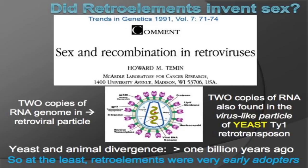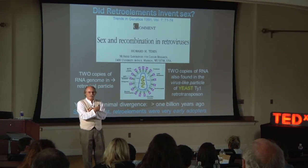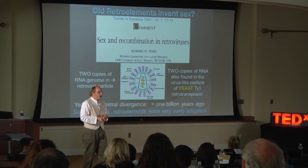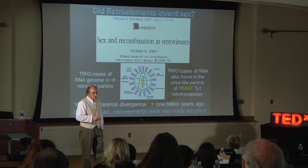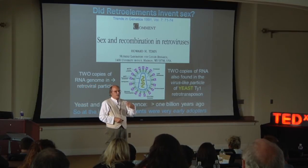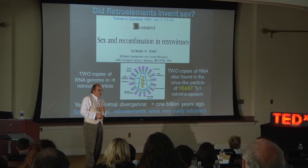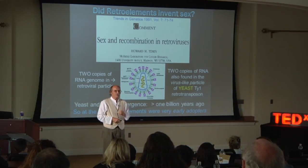Did retroelements invent sex? This is the title of a paper by Howard Temin, who shared the Nobel Prize with David Baltimore for discovering reverse transcriptase in 1970. In his paper on sex and recombination in retroviruses, he notes that in the retroviral particle there are two copies of the RNA genome — just like the definition of sex, where you get genes from your mother and father, giving you two copies that compensate for defects. He pointed out that retrotransposons from yeast also have a virus-like particle with two copies of the RNA, suggesting this is an ancient feature predating the divergence of fungi and animals over a billion years ago. At the very least, retroelements were very early adopters of sex, if not the actual inventors.